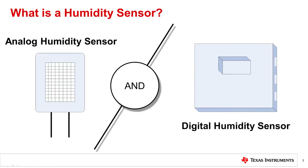A humidity sensor is a device which measures the amount of water vapor present in the environment it is exposed to. The humidity sensor actually measures pressure and temperature, or a change in electrical or mechanical condition, from which absolute or relative humidity is calculated.